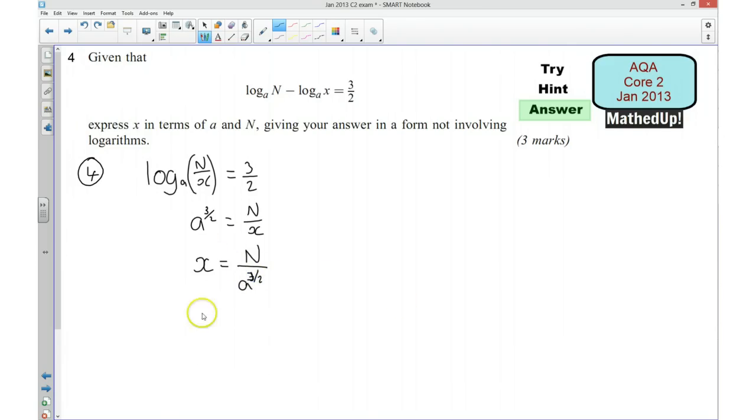And there you go. Now we can just make this a little bit simpler because I can say that x is going to be equal to N times by a to the power of minus 3 over 2.